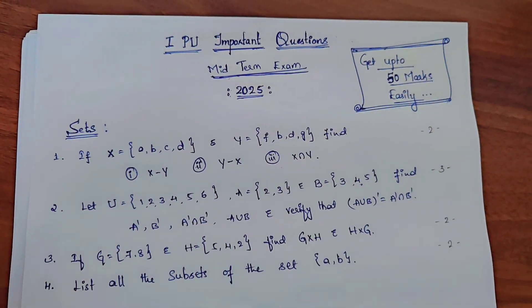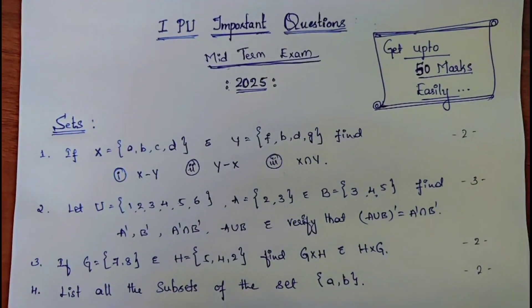First chapter is Sets, in which 4 important questions are there: 3 of 2 marks and 1 question is for 3 marks.